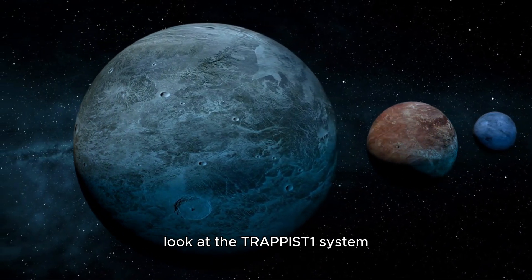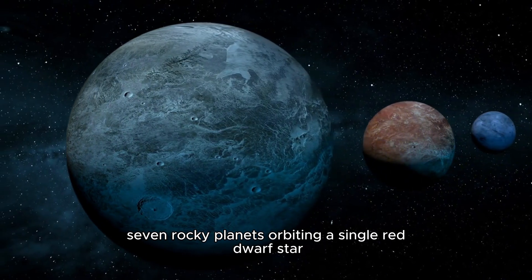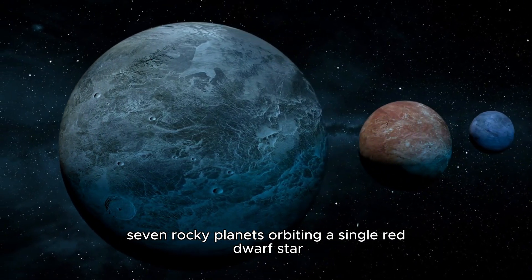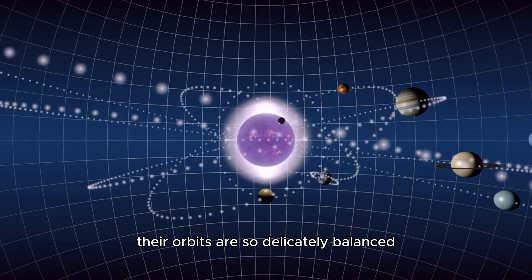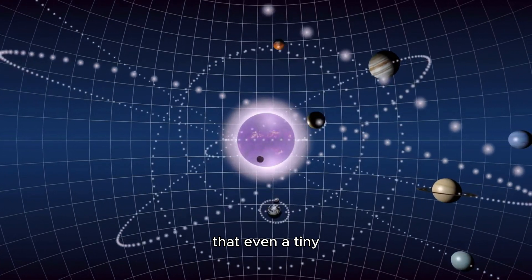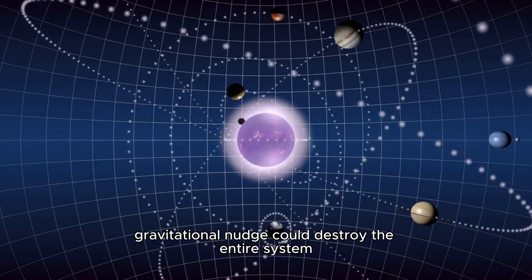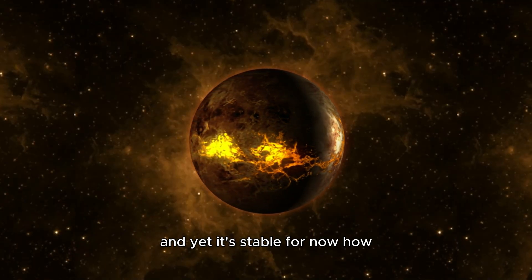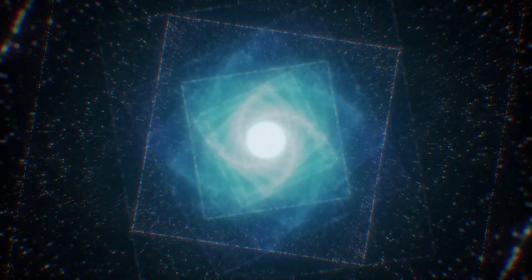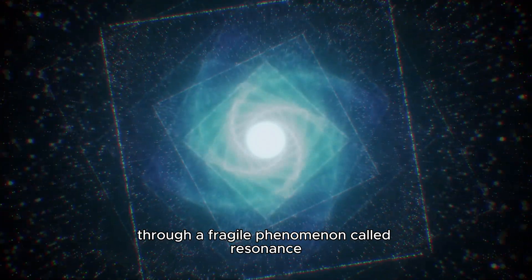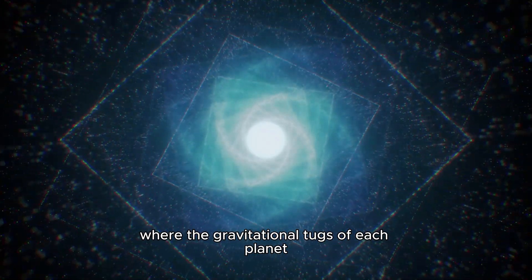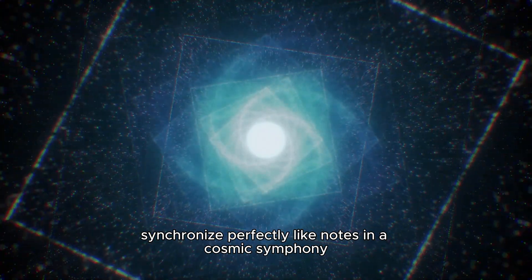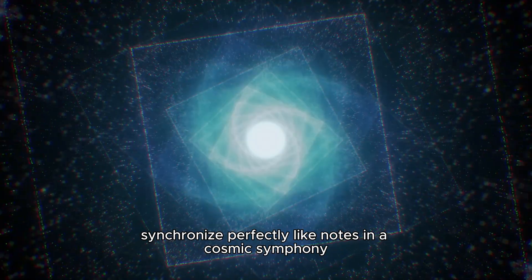Look at the TRAPPIST-1 system. Seven rocky planets orbiting a single red dwarf star. Their orbits are so delicately balanced that even a tiny gravitational nudge could destroy the entire system. And yet, it's stable. For now. How? Through a fragile phenomenon called resonance, where the gravitational tugs of each planet synchronize perfectly, like notes in a cosmic symphony.